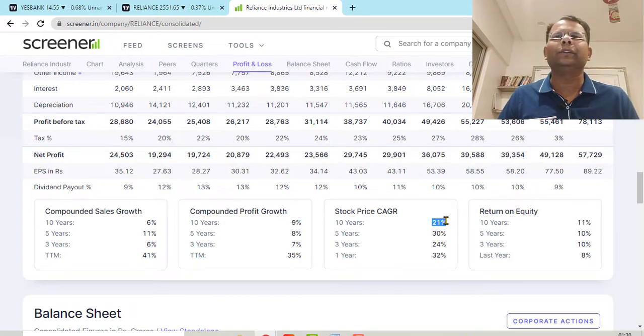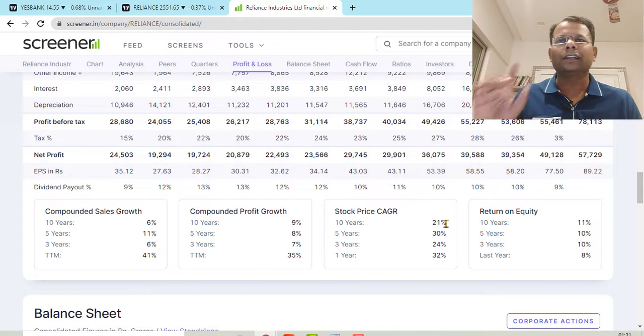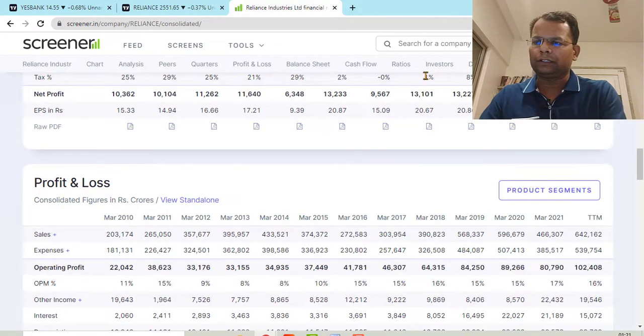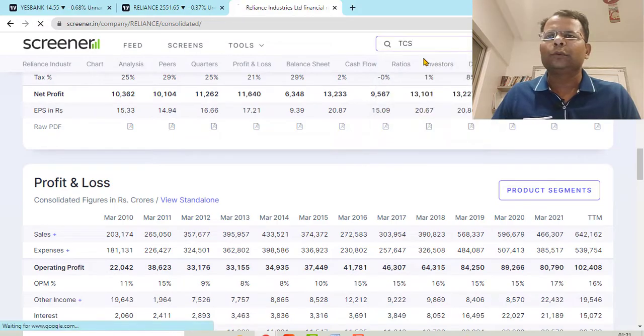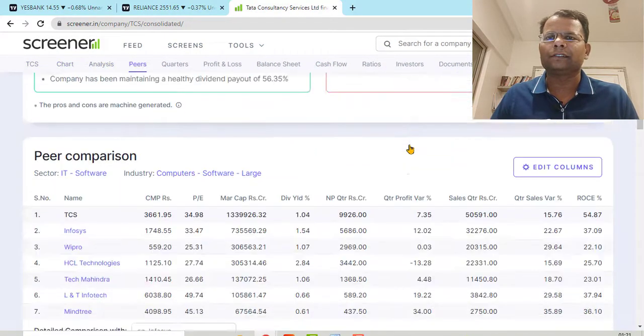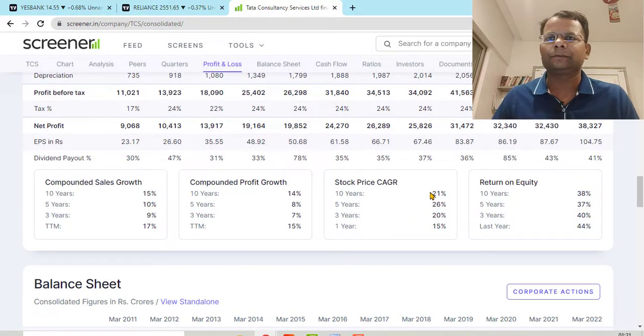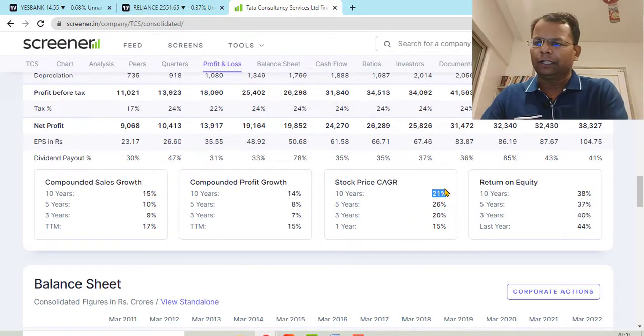It has generated 21 percent per annum return on an average basis, this Reliance particular stock. Let's take another example of TCS. So let's see what is the CAGR of TCS. It is again 20 percent 10-year CAGR.